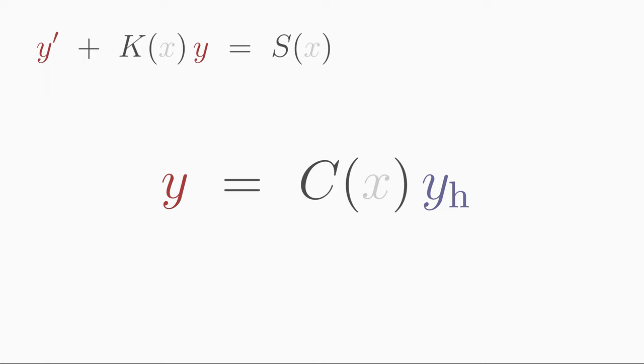You have already learned how to find the homogeneous solution yh with the previous method. All you have to do is set the perturbation function to zero. Then you have the homogeneous differential equation. You solve it with separation of variables method or directly by using the corresponding solution formula.